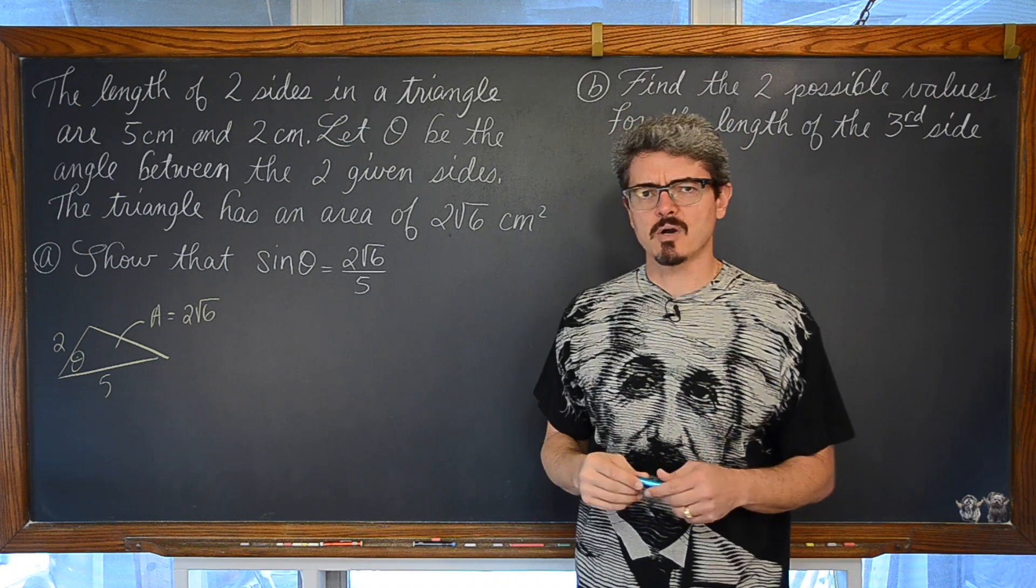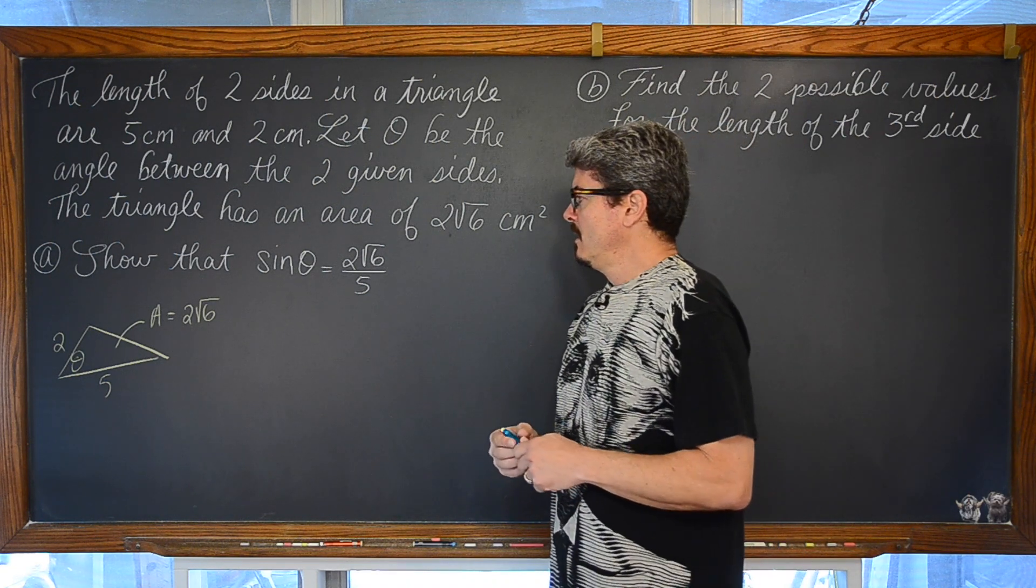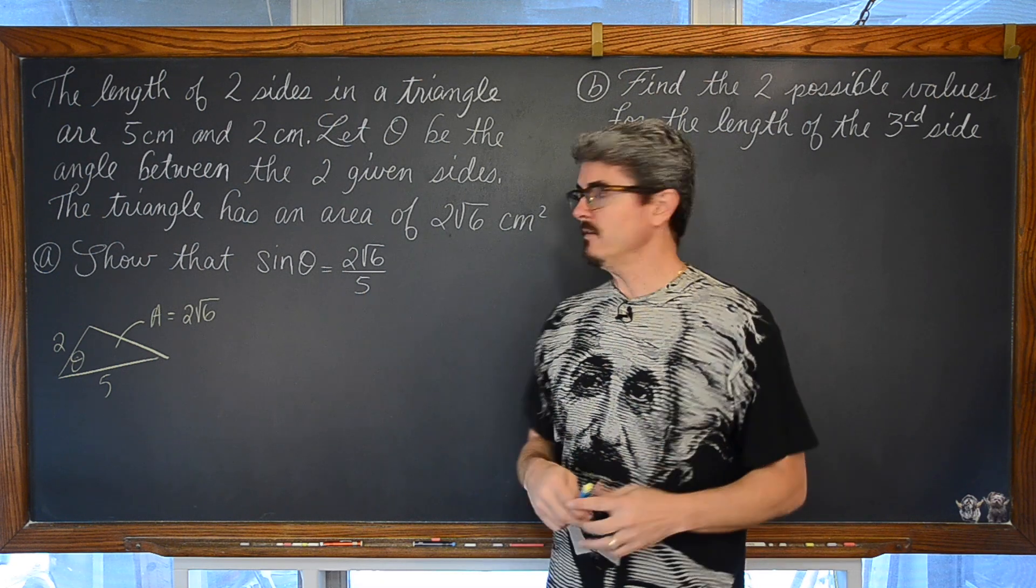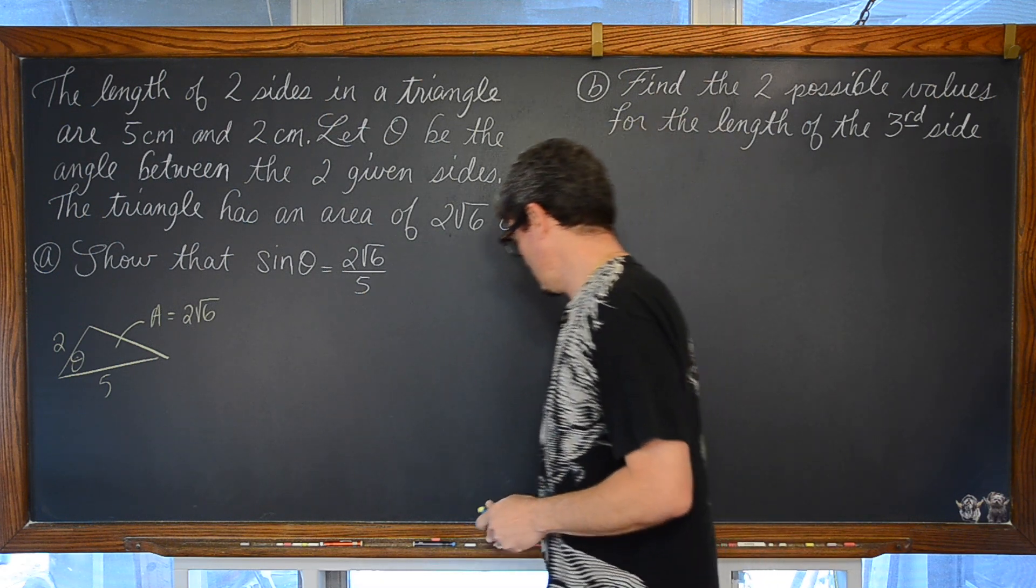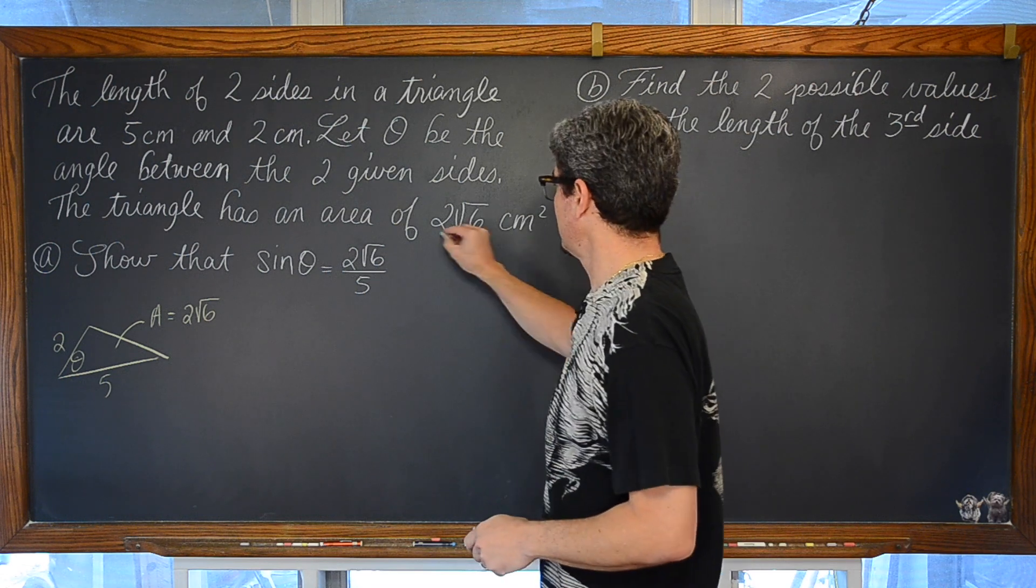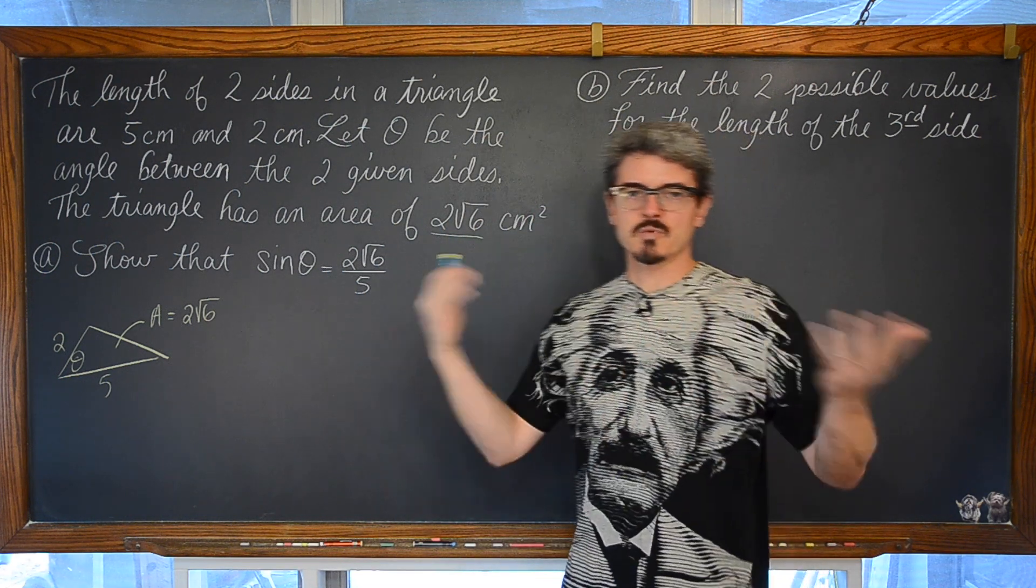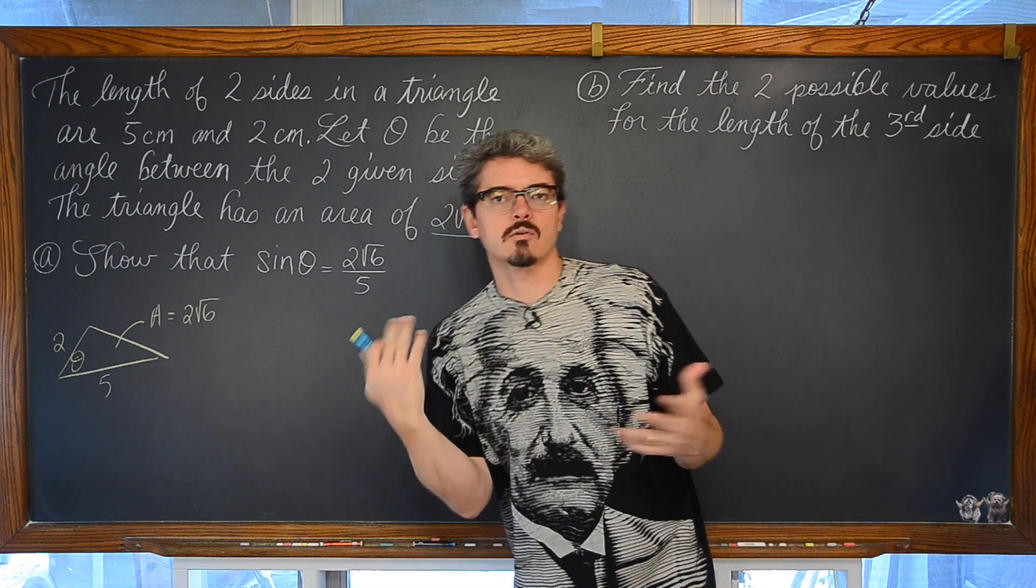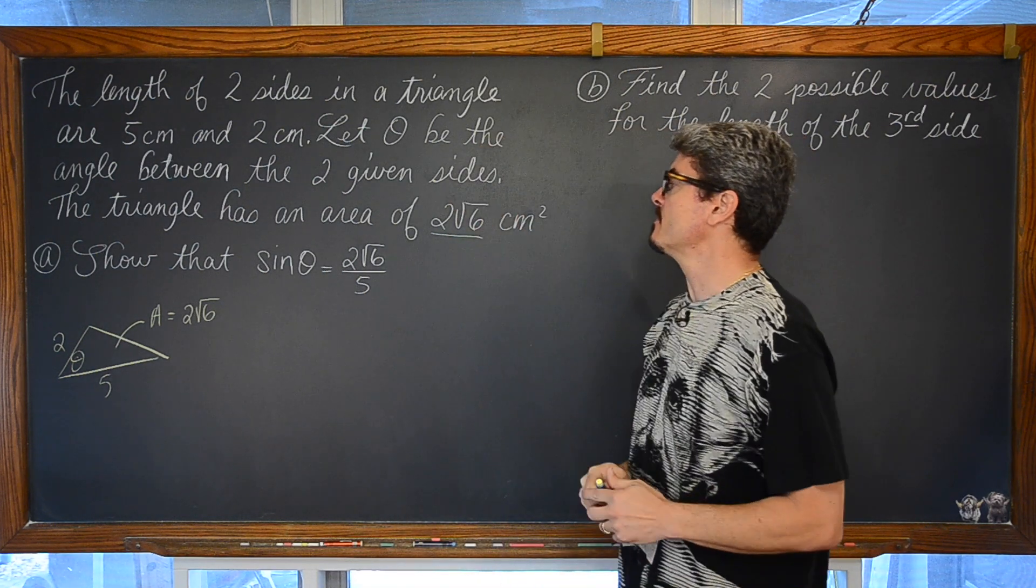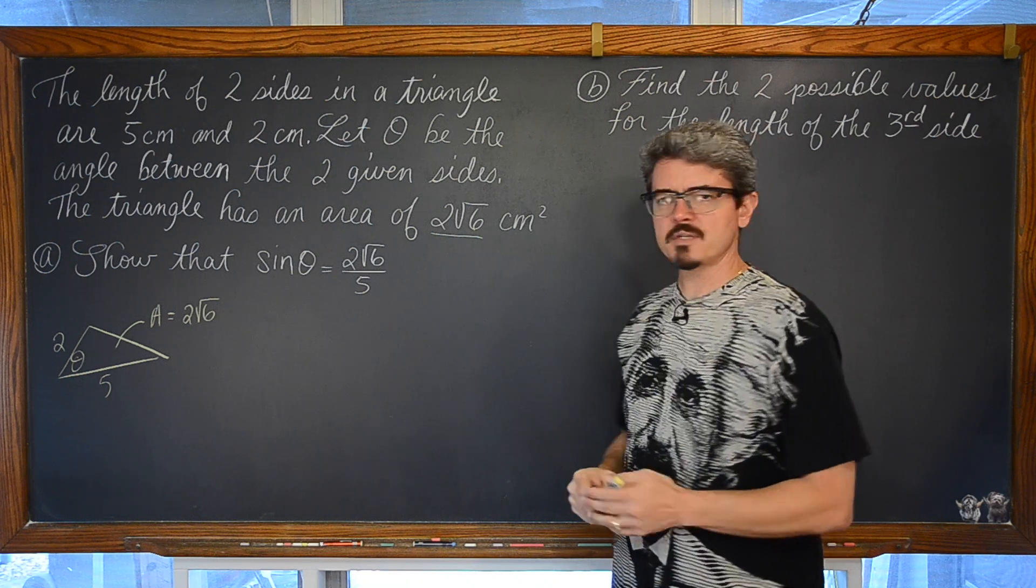So, how do we attack this problem? Well, let's see here. Whenever you are given a piece of information that has a formula attached to it, good chance you are going to start with that formula. Like if I said the distance between two points is 10, you are going to start off by setting up the distance formula. So, the area here is equal to 2 square root of 6.